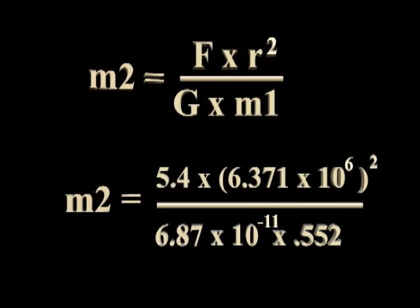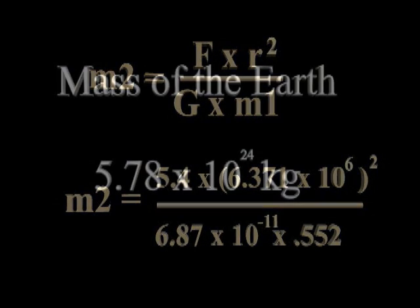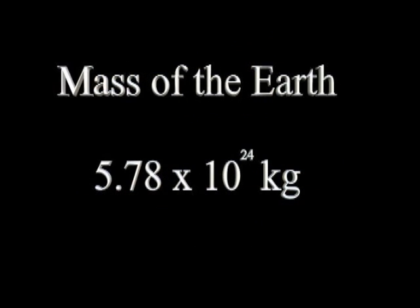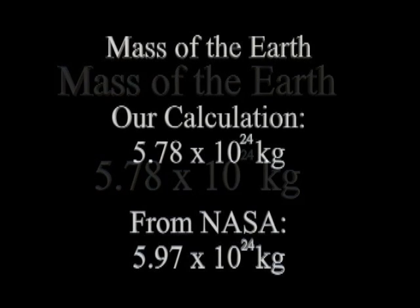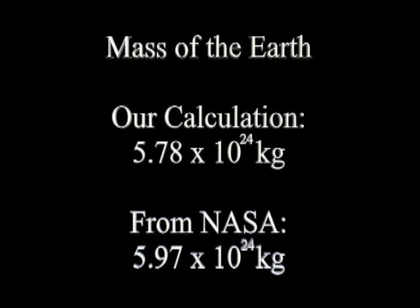For clarity, I've left the units out. Just the numbers are displayed. Doing the math, we find that the Earth has a mass of 5.78 times 10 to the 24th kilograms. The NASA website states that the Earth has a mass of 5.97 times 10 to the 24th kilograms.